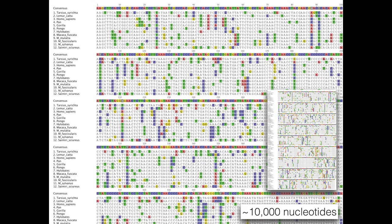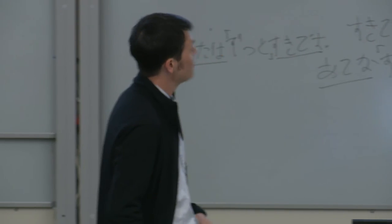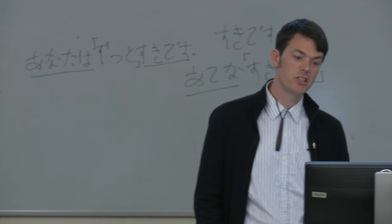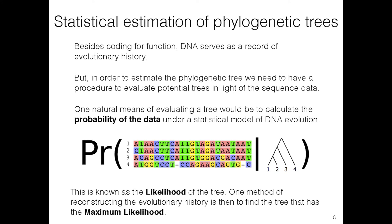Here's the kind of data we might look at: genetic, molecular sequence data. This is a very small dataset — just 12 species and only 10,000 nucleotides — which with modern methods we can compute in seconds. Given genetic data from related individuals or species, we want to learn about the underlying relationships. The premise is that besides coding for function, genetic data also serves as a record of evolutionary history. To estimate the phylogenetic tree that generated the data, we evaluate the probability that a particular hypothetical tree produced the observed sequence alignment, and we find the tree that maximizes that probability — the maximum likelihood technique.